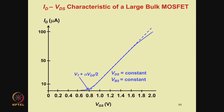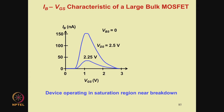Then we explained the shape of the ID-VGS curve, where the current is plotted on a linear axis. Then we explained the shape of the IB-VGS curve, where IB is the substrate current. This curve corresponded to the device operating in the saturation region near breakdown.